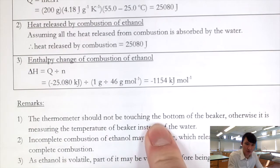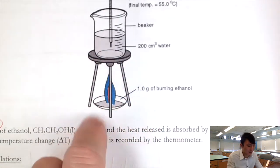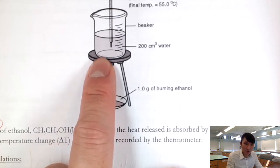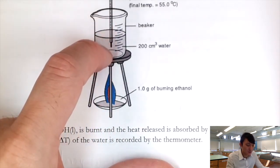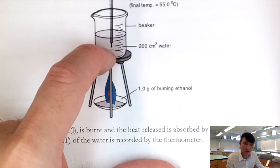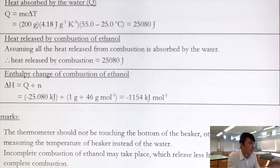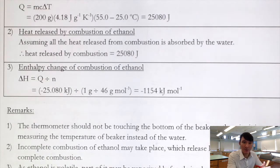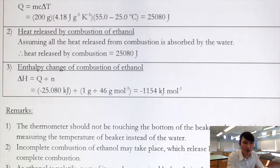Some experimental remarks: the thermometer should not touch the bottom of the beaker, because the flame contacts the beaker directly and the beaker may be hotter than the water — this would give an overestimated temperature reading. Also, incomplete combustion may occur depending on oxygen availability and the nature of the fuel; incomplete combustion releases less heat.